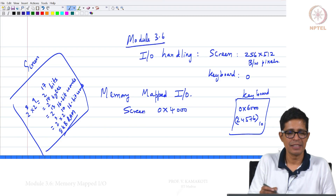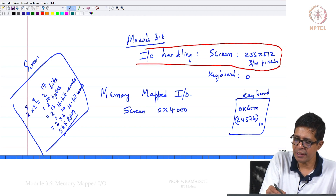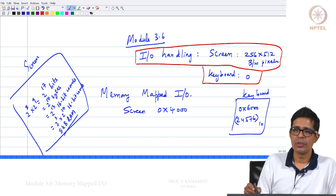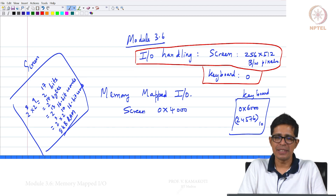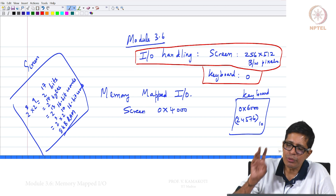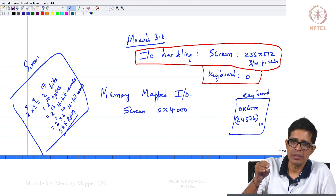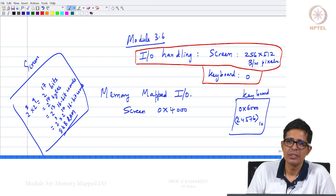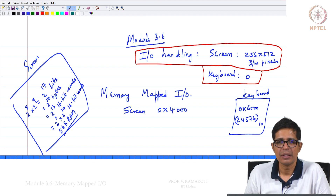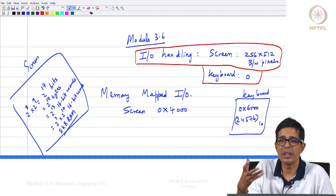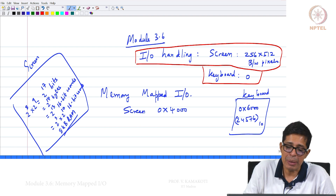Welcome to module 3.6. Now we will be dealing with one more important aspect which is IO handling. When you design a computer, namely the Hack, we need to have a method by which the user interacts with the system, and that is through inputs and outputs. We will have two simple input and output interfaces to Hack. For real-time systems, they use a concept called memory-mapped IO.